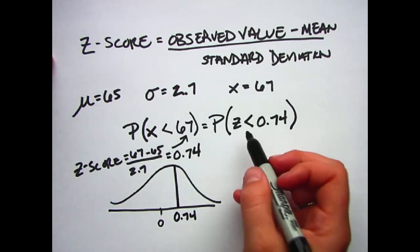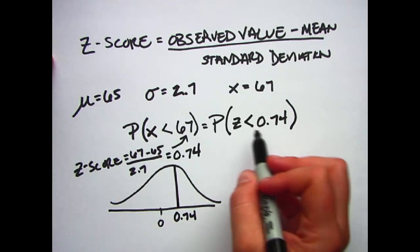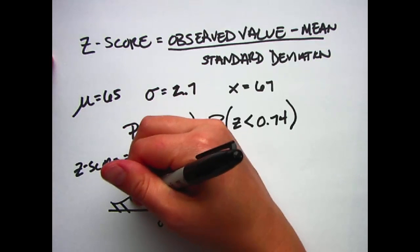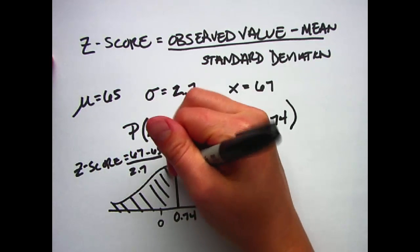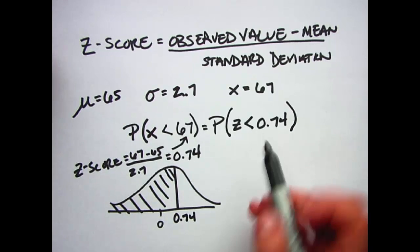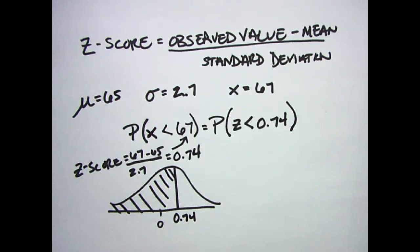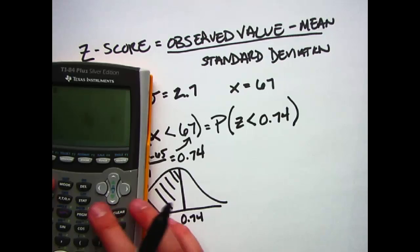I'm interested in the probability of somebody being shorter than myself, so I'm interested in this direction, the area below 0.74. So we are going to use the calculator's normal CDF function.